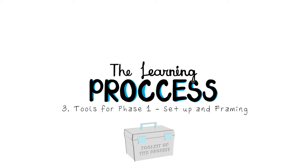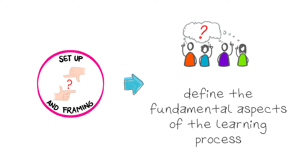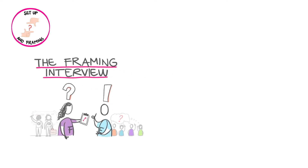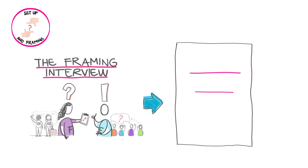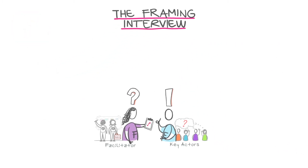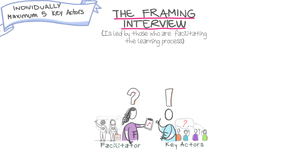Tools for Phase 1. Remember that in Phase 1, the key actors define the fundamental aspects of the learning process. We have two tools to achieve this objective: the framing interview and the framing report. The framing interview is led by those who are facilitating the learning process and is applied individually to a maximum of 5 people who are part of the key actors.